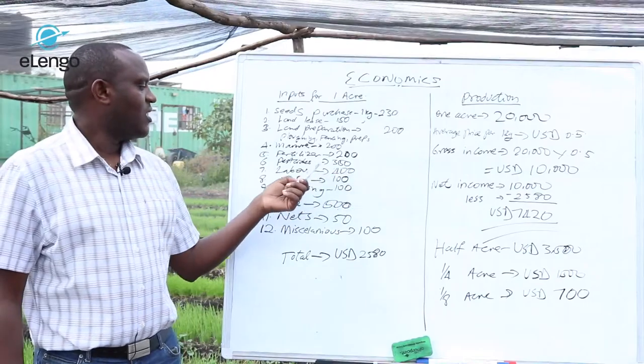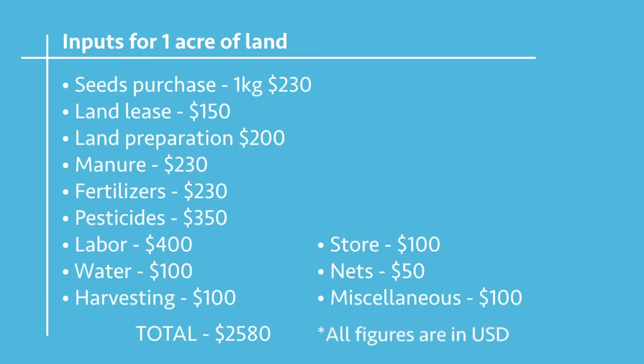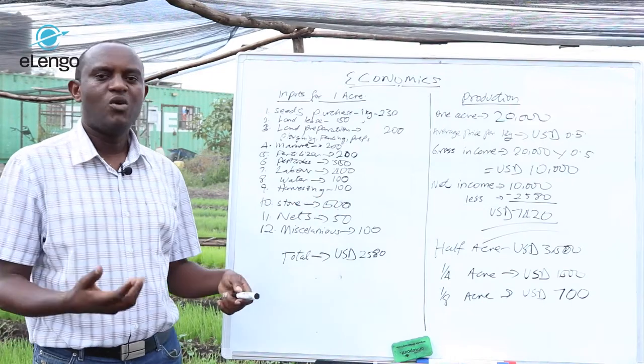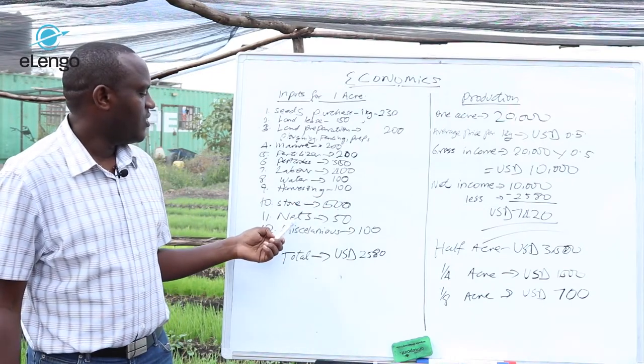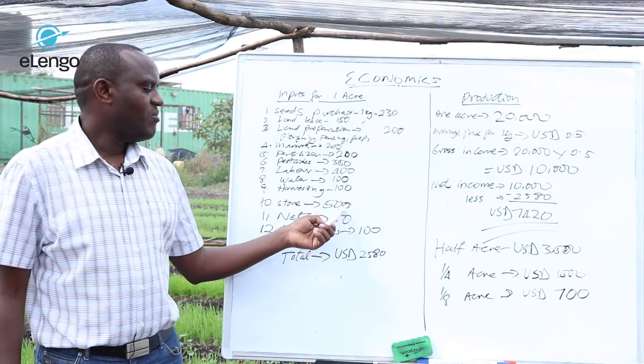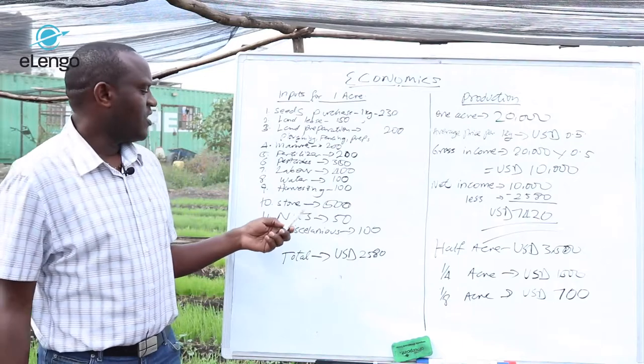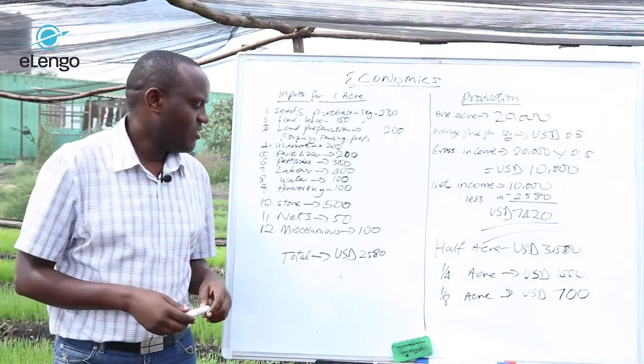Of course, the fertilizer cost may be static, and pesticide cost may also be static. But when you look at the labor, if you are partnered between two of you, you may decide to provide the labor yourselves. For the watering, this cost is mainly on the fuel for pumping, so this one is static. For harvesting, it may be static because you will need more people. And for the store, maybe you already have a store — here we are looking at somebody establishing one at around $500 US dollars.